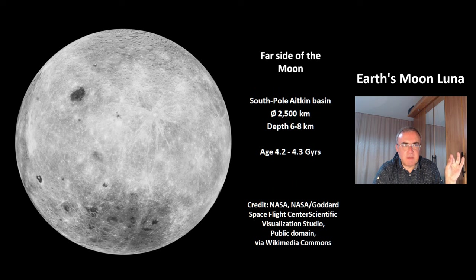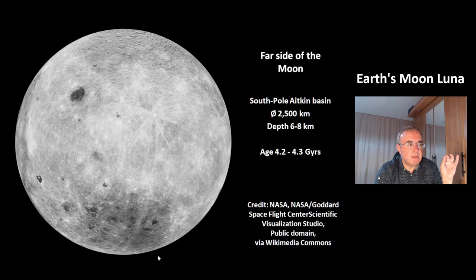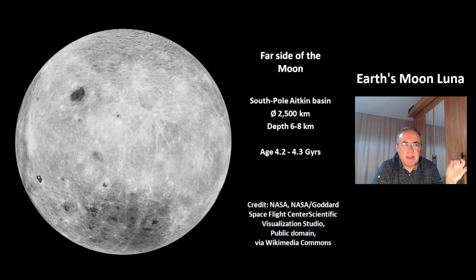This is the far side of the Moon. In the southern hemisphere there is the South Pole–Aitken Basin with a size of 2,500 km. The depth of this structure is 6 to 8 km and its age is 4.2 to 4.3 billion years.